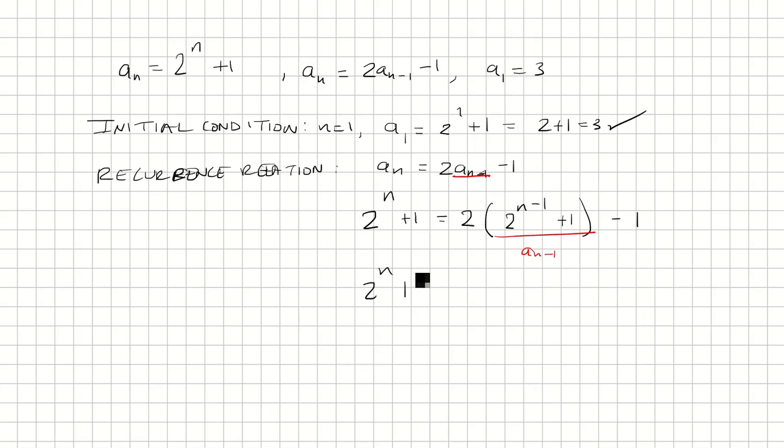Now we're just going to simplify. We'll distribute the 2. 2 times 2 to the n minus 1 is just 2 to the n. And we have plus 2 minus 1. So 2 to the n plus 1 equals 2 to the n plus 1. And so our recurrence relation is satisfied.